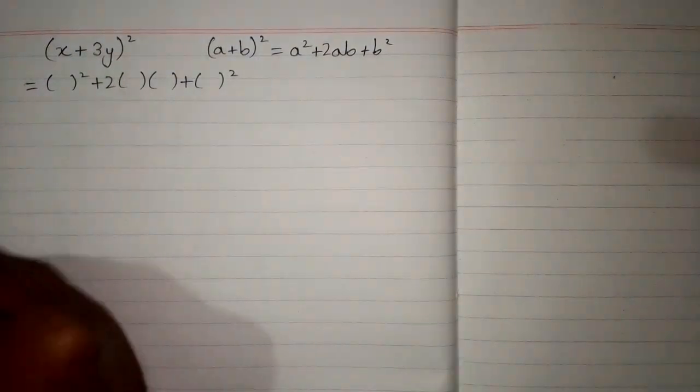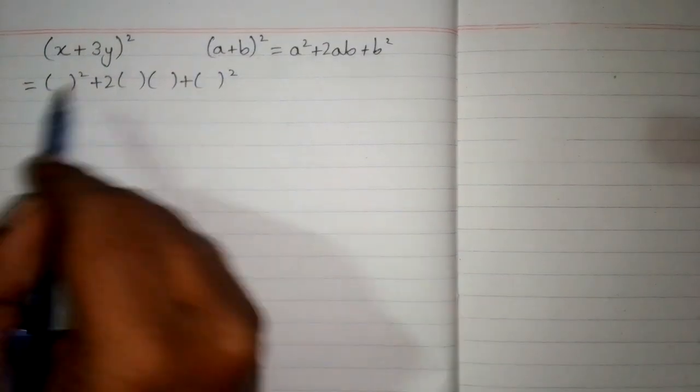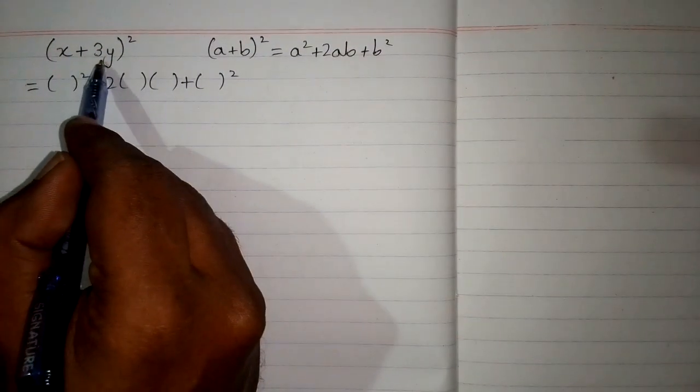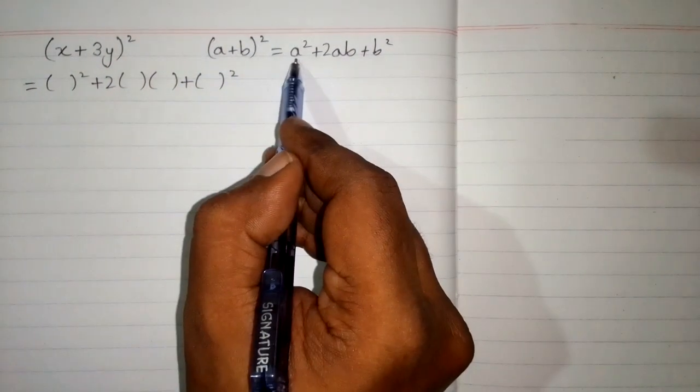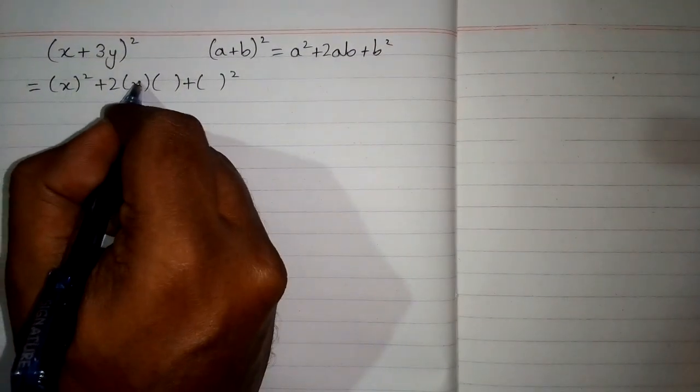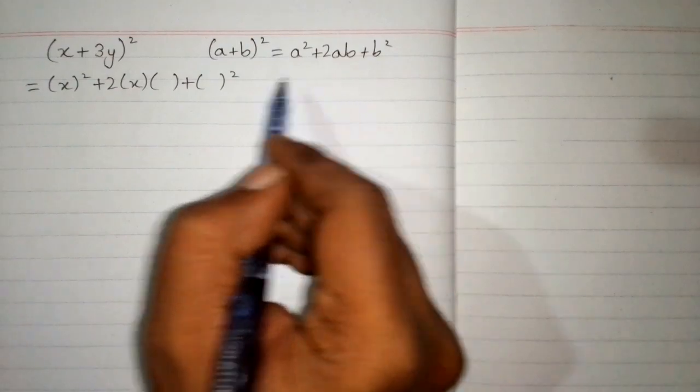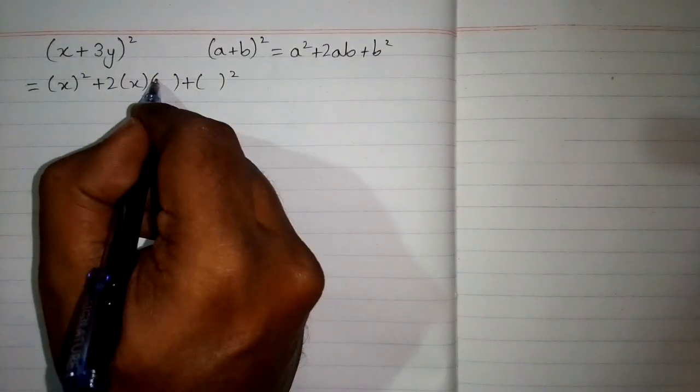Now we can see that we have x in place of this a, and then the plus sign, and 3y in place of this b. So we will put x over here and over here. We will write x in place of a in the formula, and in place of b we can write 3y.